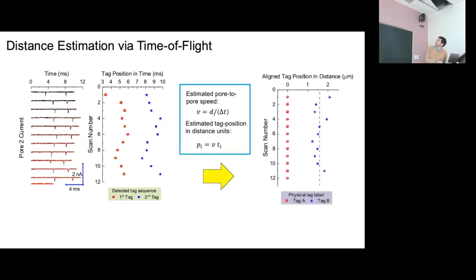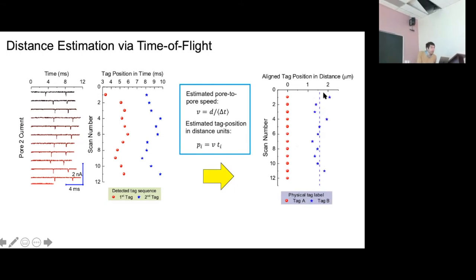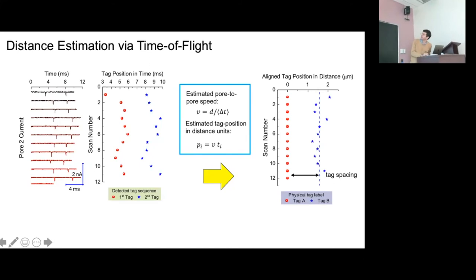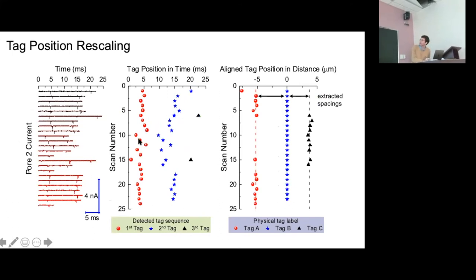An example: a multi-scan with two tags. We extract their positions, measure the pore-to-pore speed V as the distance D divided by the average time of flight over all probe measurements. Then distance is just D times time, translated to sequence space. I move tag one to zero as the reference and align all scans to that. This shows the distance between the two tags — there's scatter in the second tag's measurement, but averaging reduces the error proportional to the square root of the number of measurements.